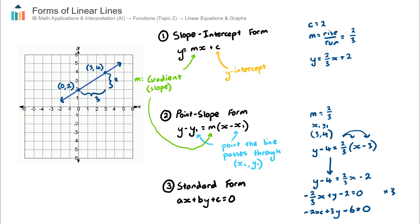Just to recap: in this video I found the equation of this blue line using a couple of techniques. I have the equation in slope-intercept form and in standard form. Now they look different, but they are essentially the same equation, just rearranged differently. Either of those two answers would be fine depending on what the question asks. That concludes our video on the different forms of linear lines.